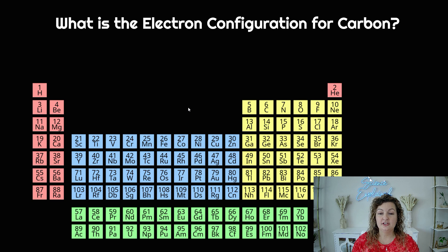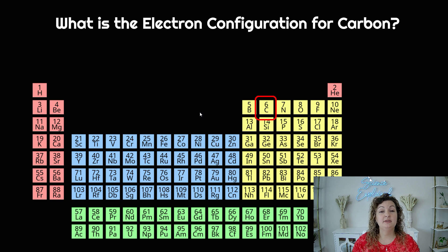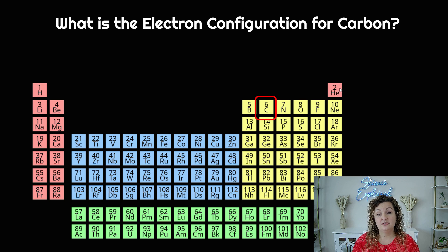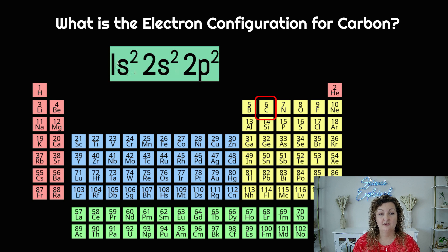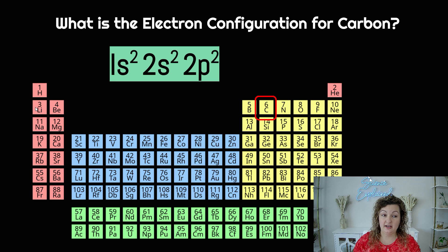Let's try another one — you're gonna need to write down a little bit more. So let's look at carbon. First thing we need to do is find carbon — carbon is right here. Once you locate that, start at the beginning of the periodic table and write it down as you go. So we start here: 1s1, 1s2. I need to write this one down because this is an endpoint — so I would write 1s2. But I now need to continue.